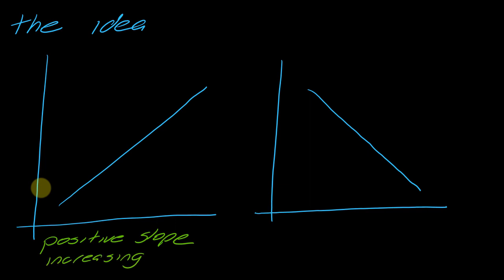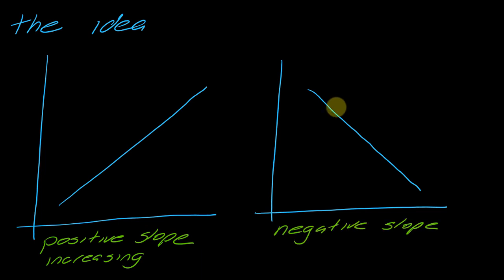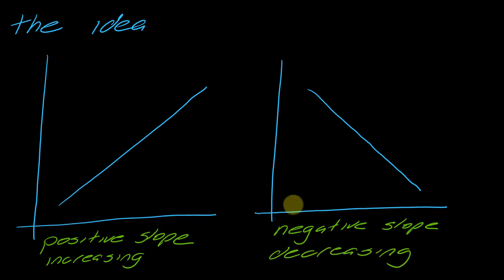On the flip side, what about this one? Is this a positive or negative slope? By process of elimination, it's a negative slope. Therefore it's decreasing. So you have this directional sense of how these functions kind of work.